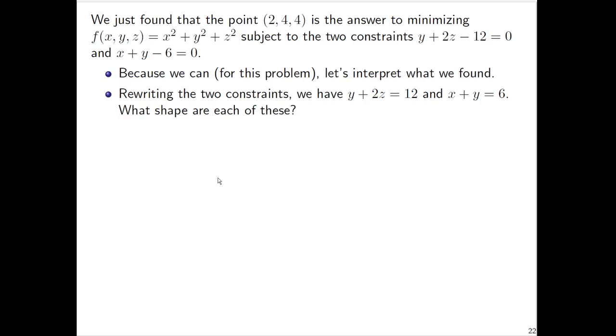Now normally we just do the problem and be done with it, but let's interpret what we found because we can. In general for these problems it's hard to actually interpret what happened, but let's look at the two constraints. What shape is y + 2z = 12? What shape is x + y = 6?